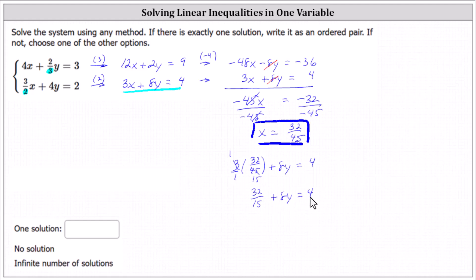Next, we will subtract 32/15 on both sides of the equation to isolate 8y. Simplifying, we have 8y equals 4 minus 32/15. Let's work this out on the side. We'll write 4 as a fraction with a denominator of 1.